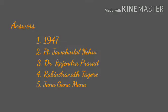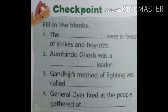Children, you can check your answers from here. Check points. Fill in the blanks. First one: The blank were in favor of strikes and boycotts. And the answer is moderates.